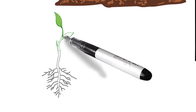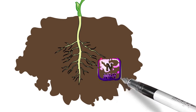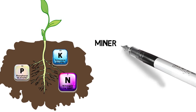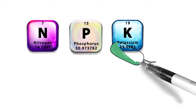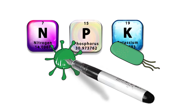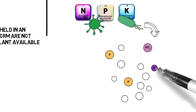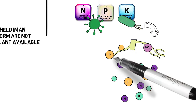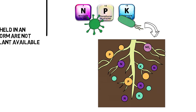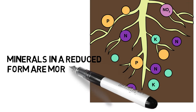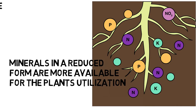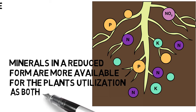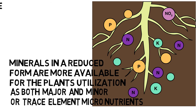The minerals in raw manure are often held in an oxidized form which are not readily plant available. The minerals in composted manure are retained in a reduced form. This means they are far less leachable because of their retention in organic matter structure and microbial bodies, and they are in a reduced form which is more available for the plant's utilization. Oxidized minerals cannot be utilized by a plant; reduced minerals are the form that the plant uses for its major and minor trace element micronutrients.